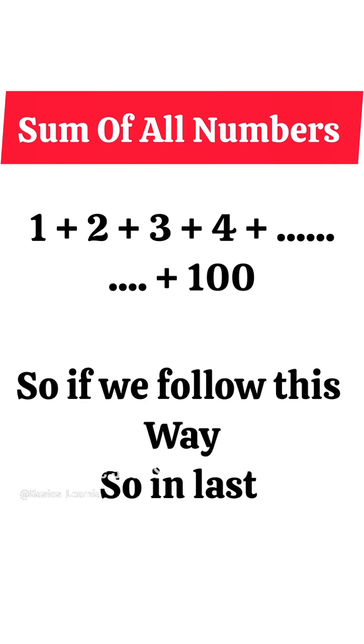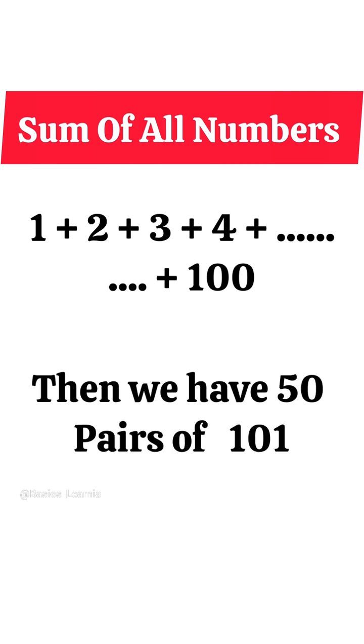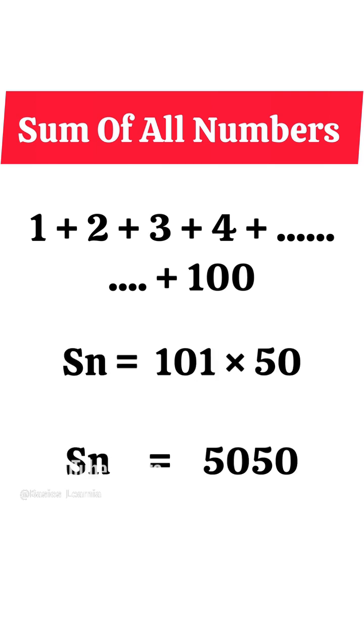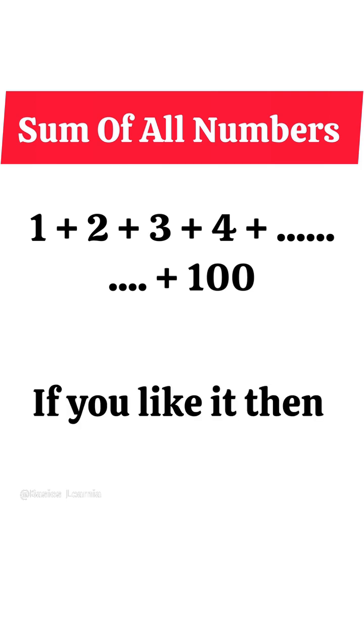So if we follow this way, last it will give you 50 pairs of 101. Therefore if we calculate this, Sn is equal to 101 multiplied by 50 is equal to 5050.